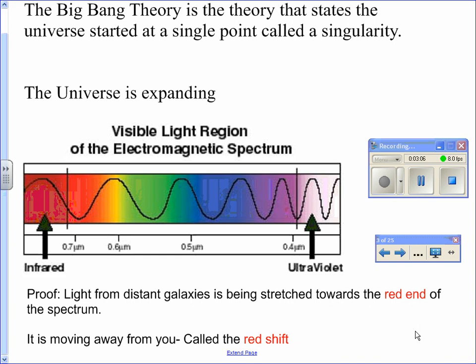That's proof. The light from distant galaxies is being stretched out towards the red end of the spectrum. It's moving away from you. It's called the red shift.